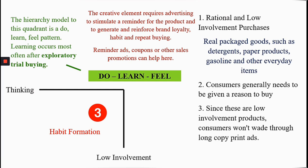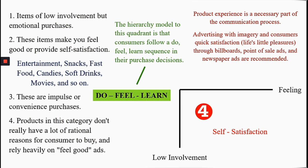The final quadrant focuses on self-satisfaction — low involvement versus high feeling. Items of low involvement but with emotional attachment toward the purchase fall here. Products and services such as entertainment, snacks, fast food, candies, soft drinks, and movies fall under this category. All of these make you feel good and give self-satisfaction. Most of these products are impulse or convenience purchases.